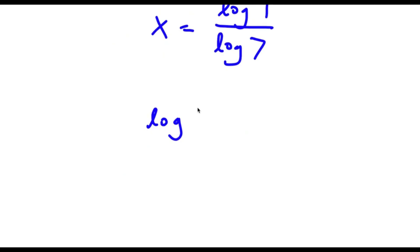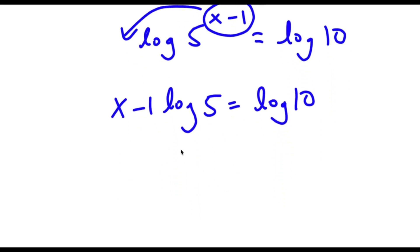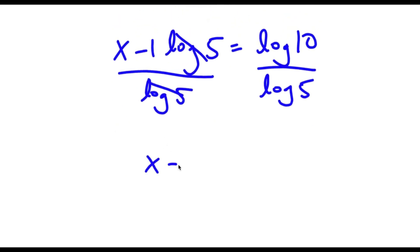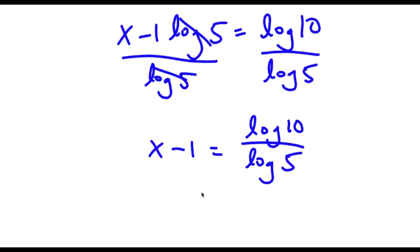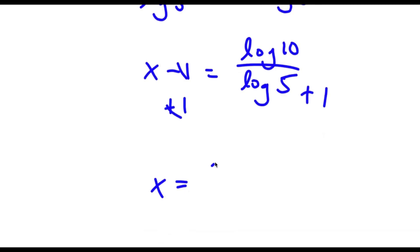Going back to our original problem, we had log of 5 to the power of x minus 1 is equal to log 10. Moving x minus 1 to the front gives x minus 1 times log 5 equals log 10. Now I divide both sides by log 5, so these cancel out and I'm left with x minus 1 equals log 10 over log 5. Now I add 1 to both sides: x equals log 10 over log 5 plus 1.